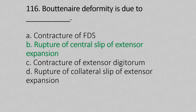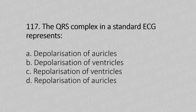Question number 117: The QRS complex in a standard ECG represents — Option A: depolarization of atria, Option B: depolarization of ventricles, Option C: repolarization of ventricles, Option D: repolarization of atria. The answer is Option B, depolarization of ventricles.